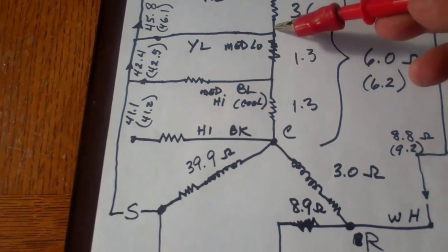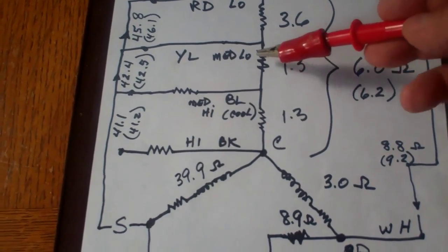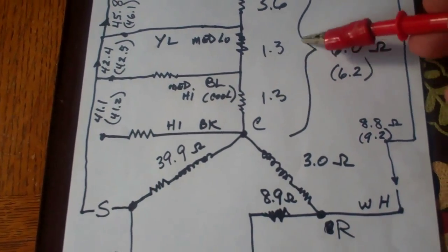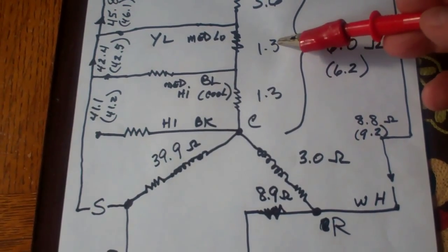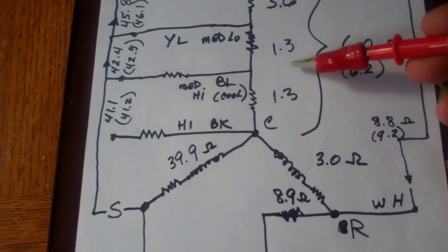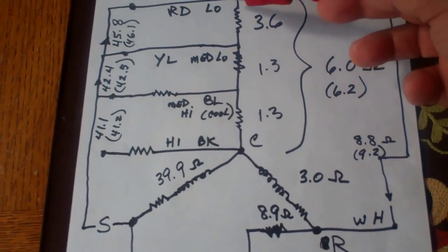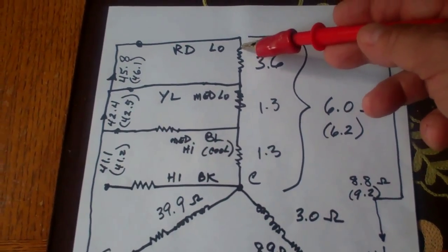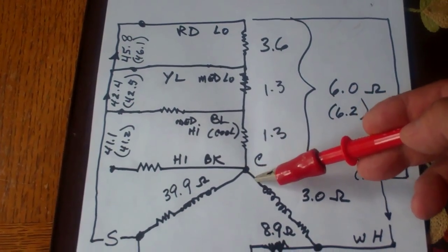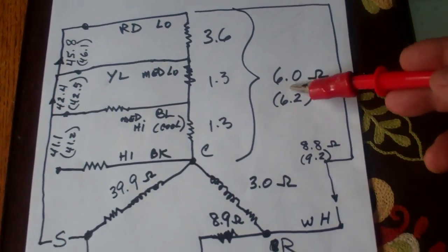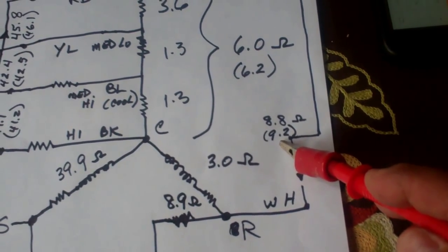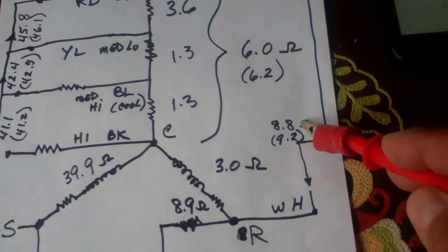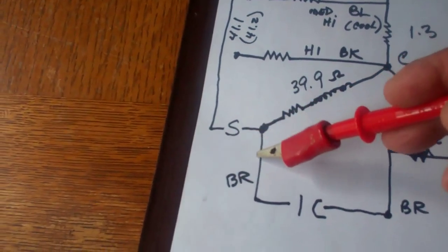So if you were to measure from yellow to blue, well, yellow to blue is 1.3, but yellow to black would be 2.6. That should be somewhere around that number right there, the sum of these two. From red to white would be the sum of all of these numbers here coming this way. And in my case, that adds up to 9.2. That's what I was looking for. I got 8.8. Very close.